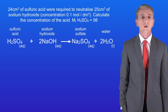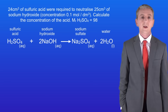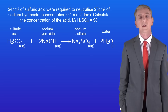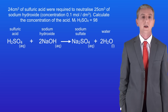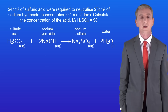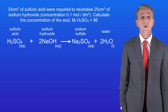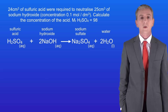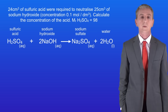Here's a question for you to try. 24 centimetres cubed of sulphuric acid were required to neutralise 25 centimetres cubed of sodium hydroxide with a concentration of 0.1 moles per decimetre cubed. Calculate the concentration of the acid. Pause the video now and try this yourself.